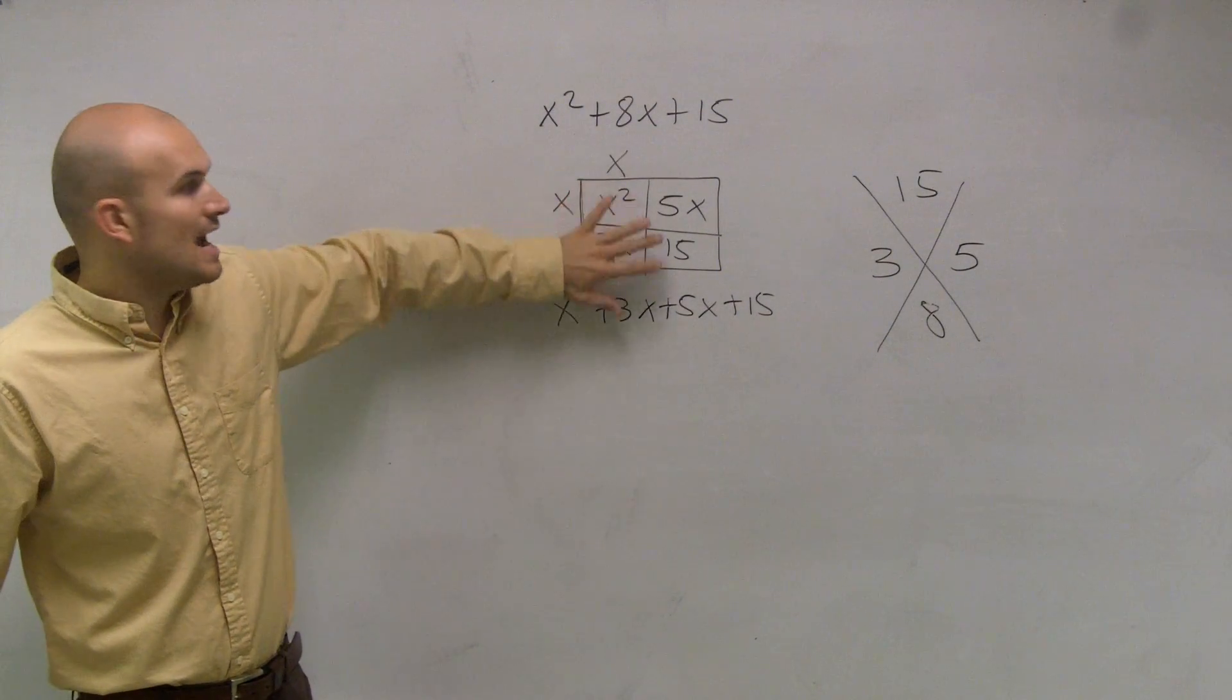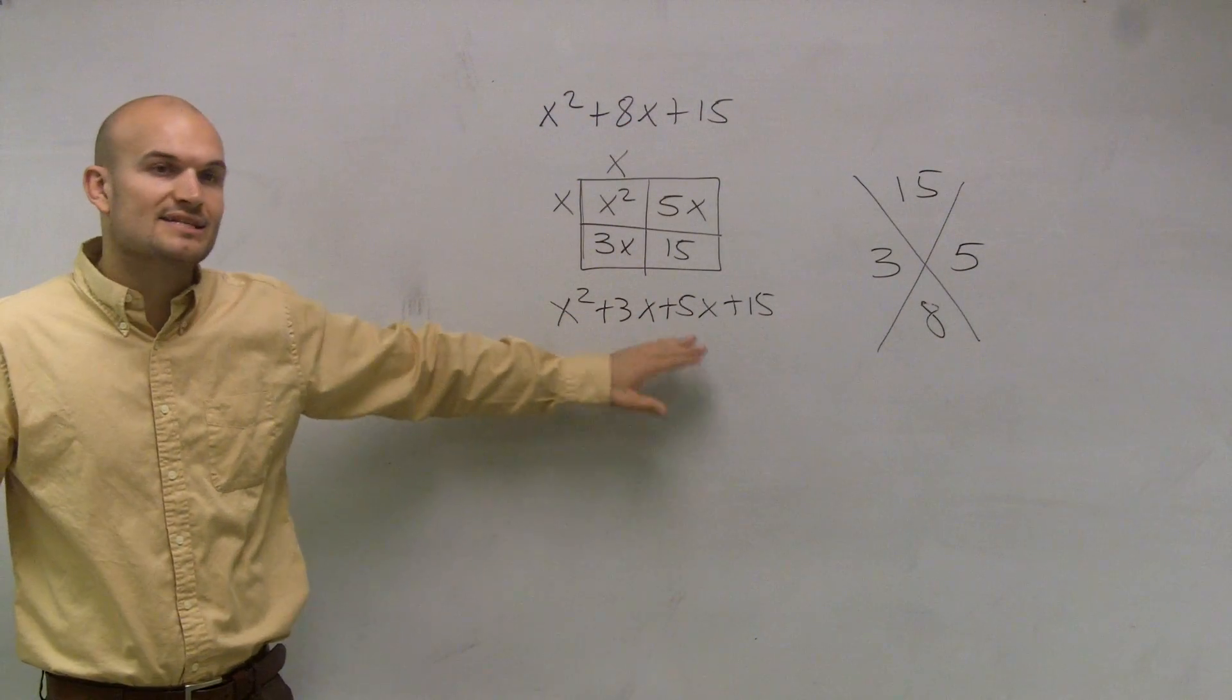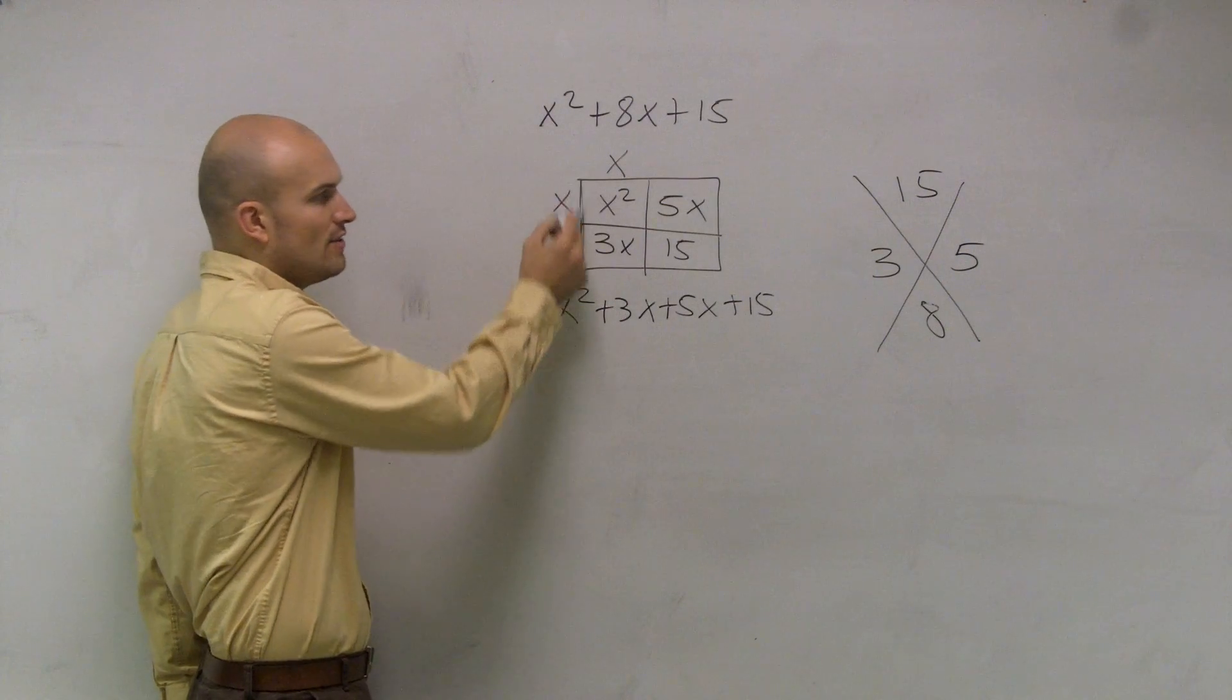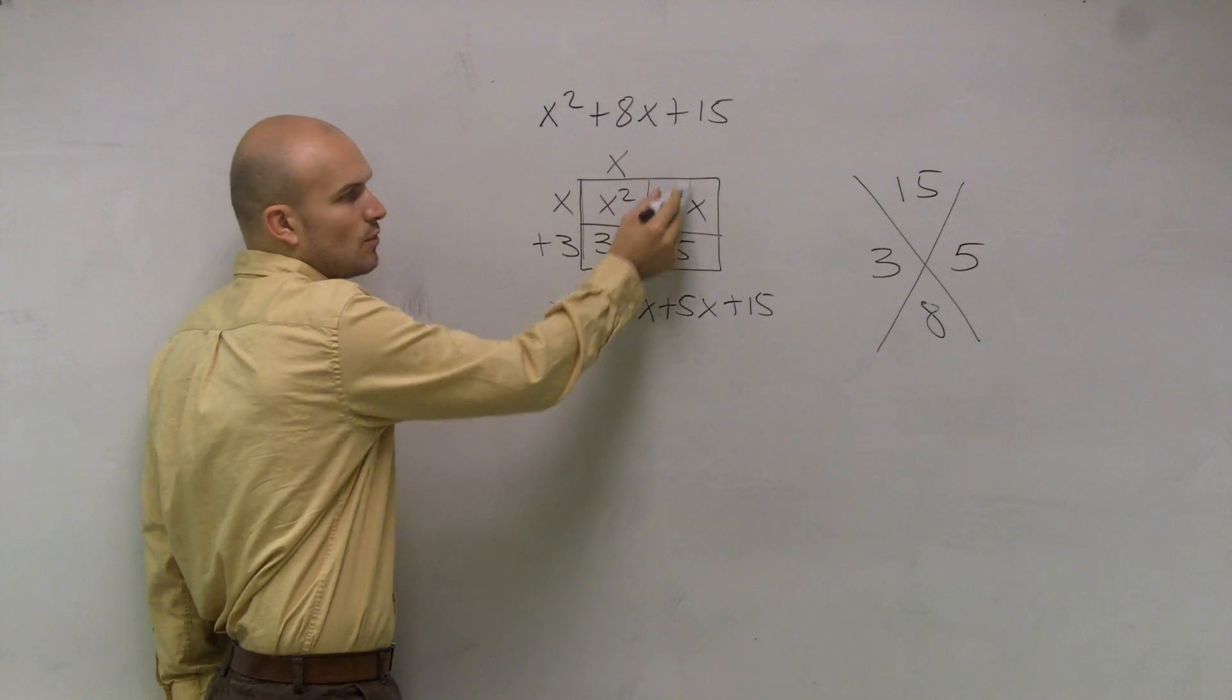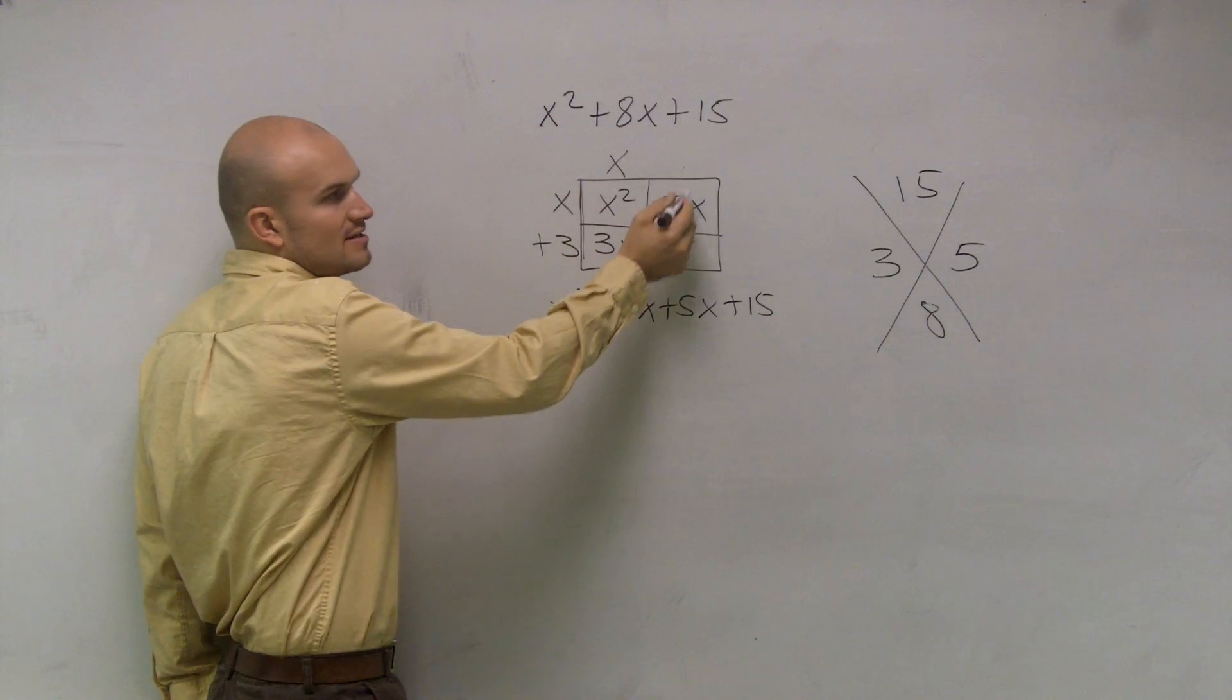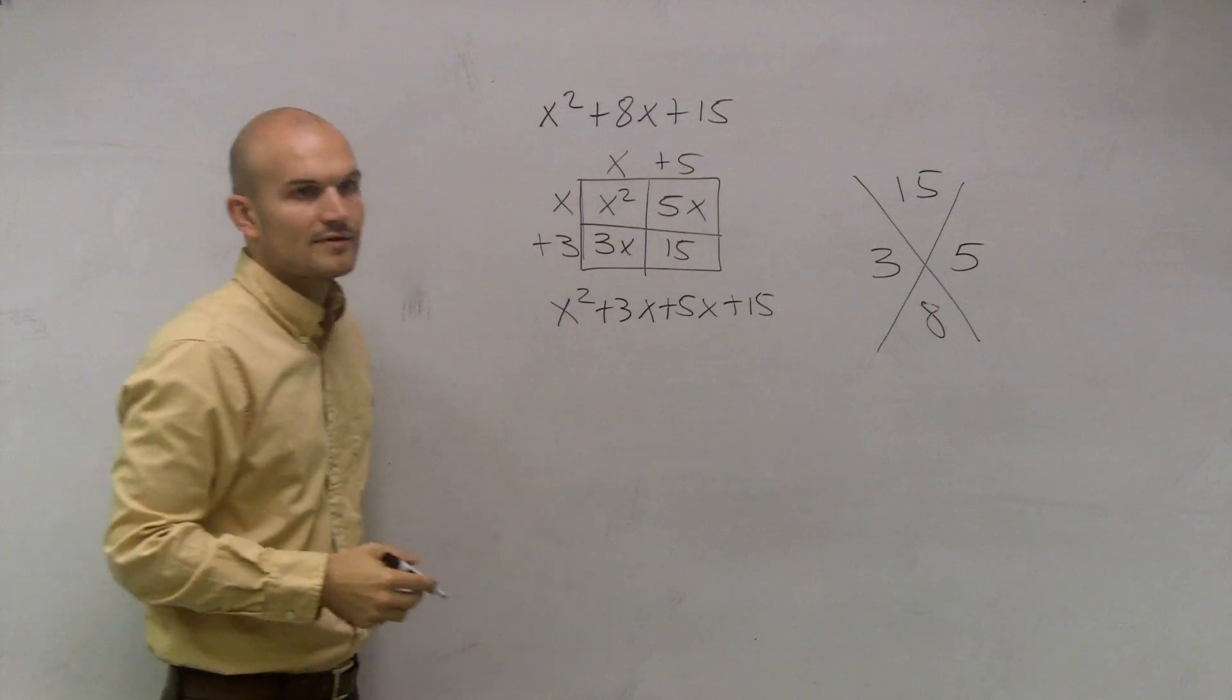So I now have this area is what that represents. I just represent it in a different way. So now what I need to do is I need to figure out what the side lengths are. I know that X times X gives you X squared, but X times what gives you 3X? And then X times what gives you 5X? So this times X gives you 5X.